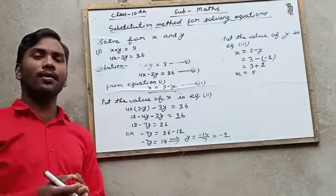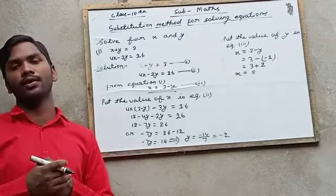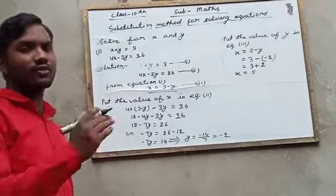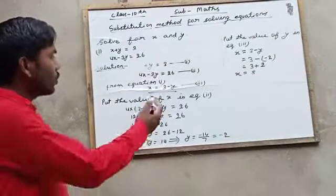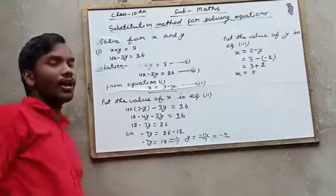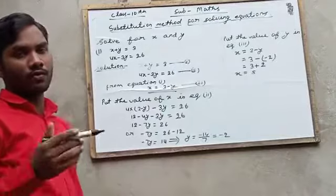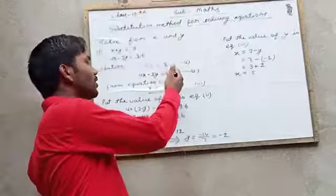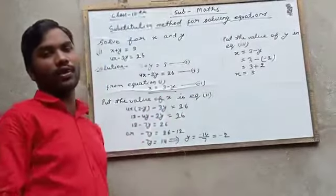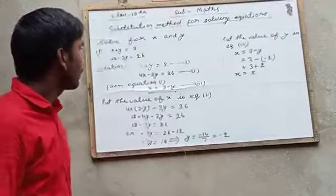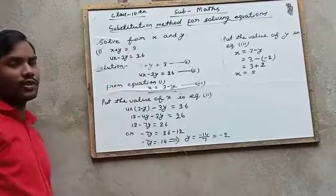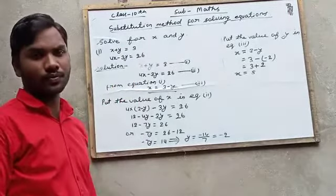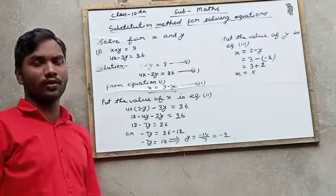So for solving this equation, first of all we will convert one variable in the form of another variable and that value will put in next equation. So easily we can find the value of one variable. After putting that variable value in any of these equations we can find the value of another variable. So this is the substitution method for solving the equation. Let's solve. Thank you.